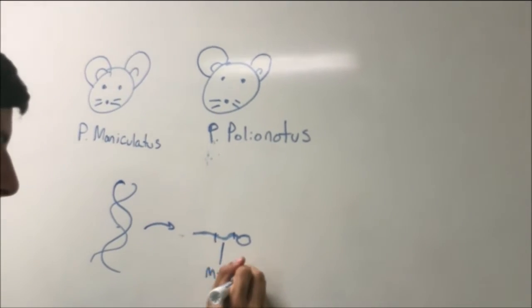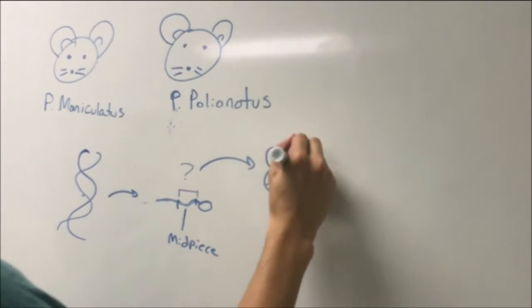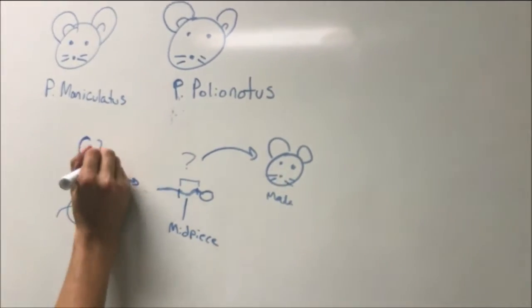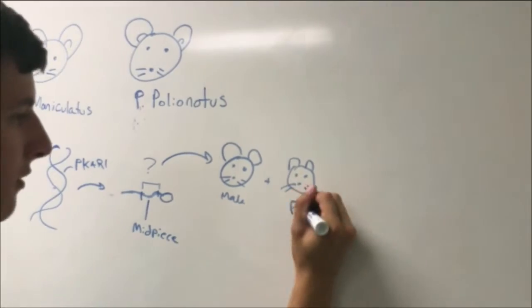Sperm midpiece is the part of the sperm which helps propel the sperm to fertilize the egg. Experimenters aim to see how the PKAR1 gene is responsible for sperm midpiece length and how this midpiece length affects how many offspring the mice have.